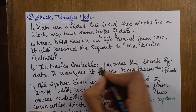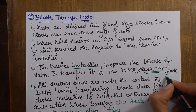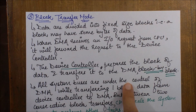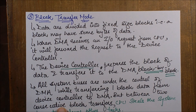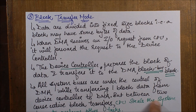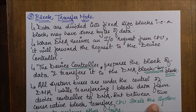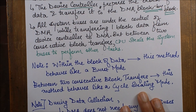Notice the difference: the device controller is now transferring the data block by block and not byte by byte. All system buses are under the control of DMA while transferring one block of data from the device controller to the DMA. But between two consecutive block transfers, the CPU again steals the system buses to perform other tasks.